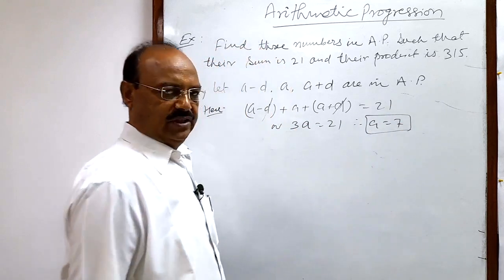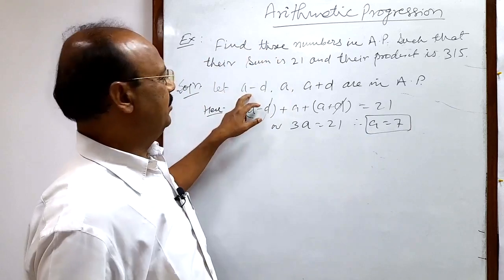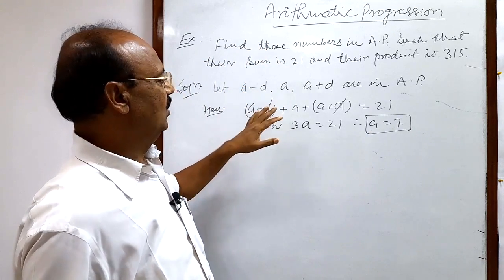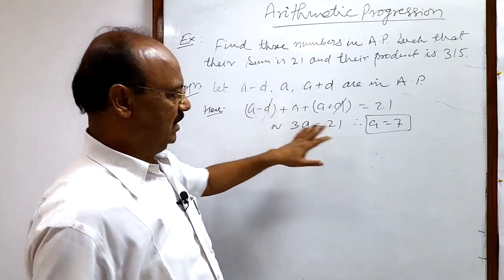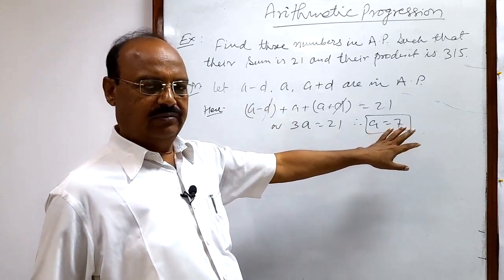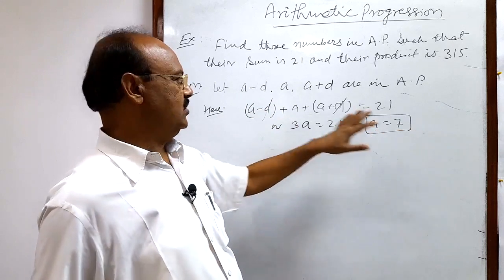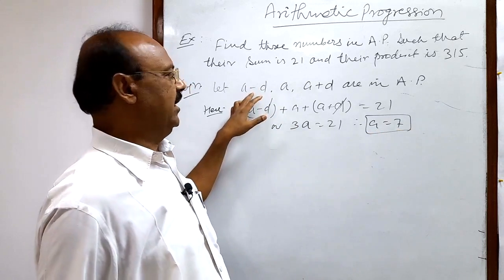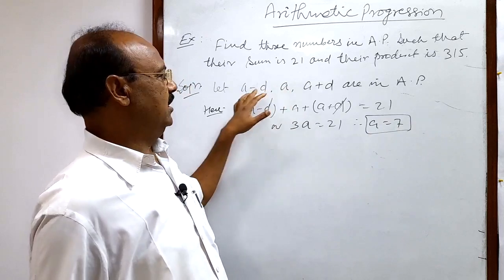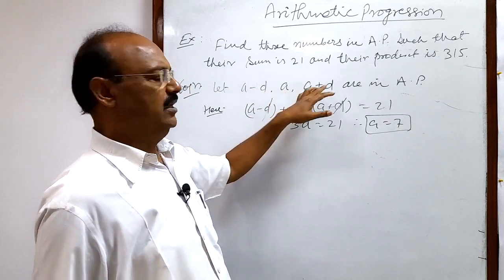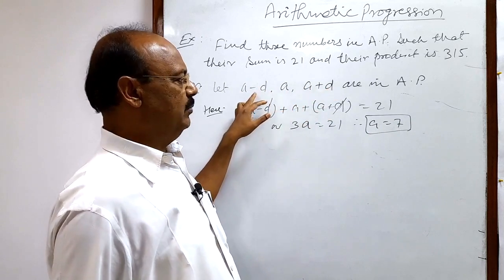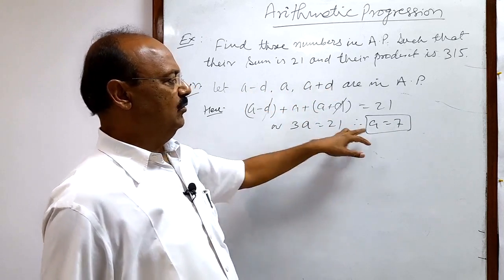Note that a equals 7 is not the first term here — do not confuse. The first term is a minus d, since the three consecutive terms are a minus d, a, and a plus d. Now we need to find the value of d.